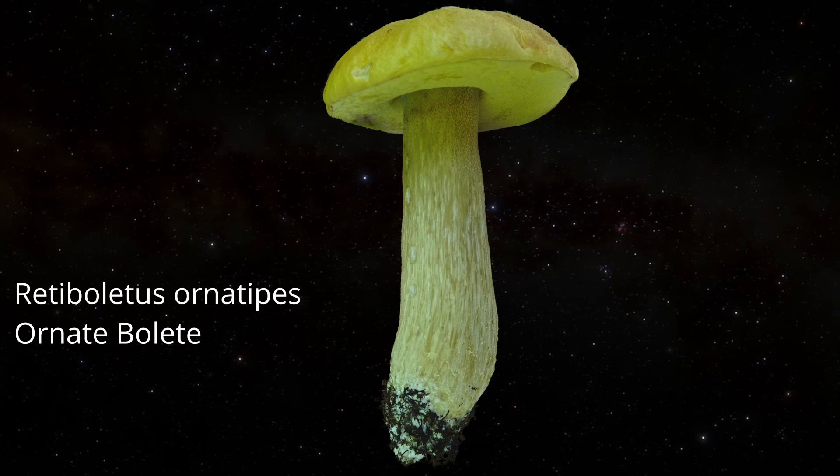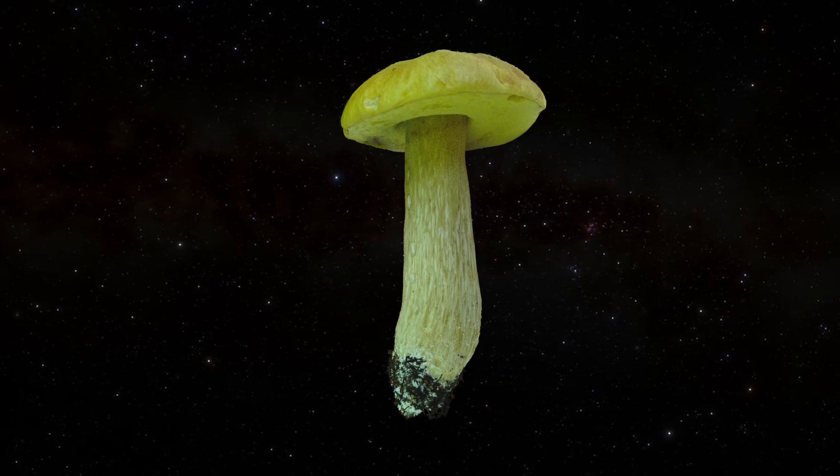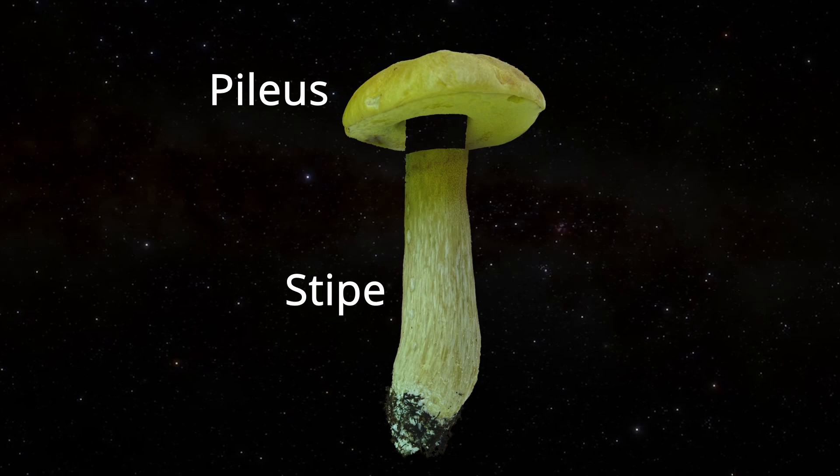Fundamentally, porous cap-and-stem mushrooms can be broken into two parts: the pileus, which is typically known as the cap, and the stipe, which for all intents and purposes is the stem of the mushroom.